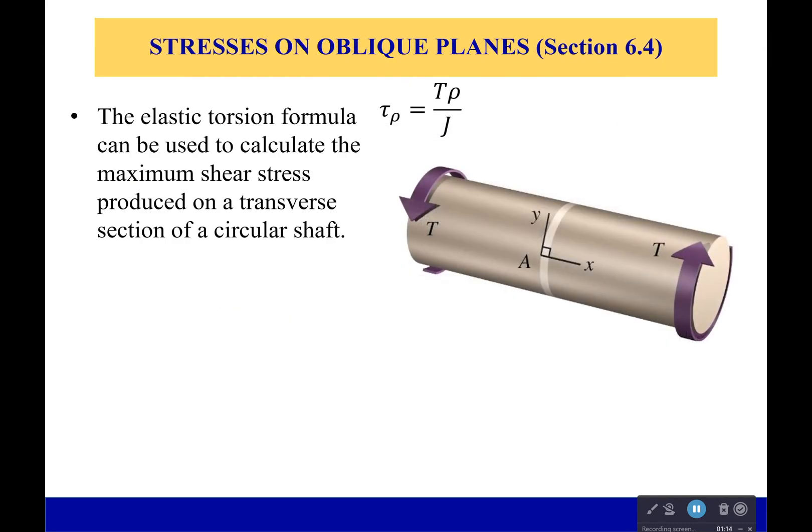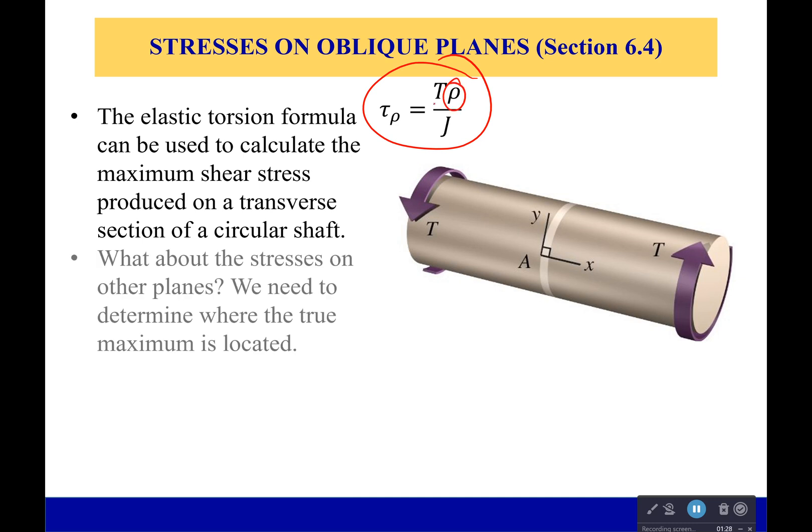So we had our elastic torsion formula which we got last time and it can be used to calculate the maximum shear stress. Now obviously the maximum shear stress happens on the surface where our radius is at a maximum. So if it's going to fail somewhere it's most likely going to start failing on that surface. However, while that is talking about that in-plane shear stress, what about the other planes? What if we angle it? How is the shear stress going to change? Could we actually see a normal stress? Because remember these torques, we never actually saw a normal stress be caused by this. So we really need to understand where the true maximum is located or at least where shear stress and normal stress are maximums to help understand where our material might fail.